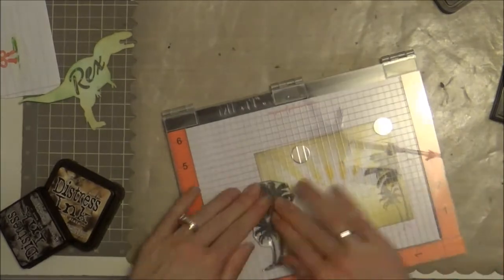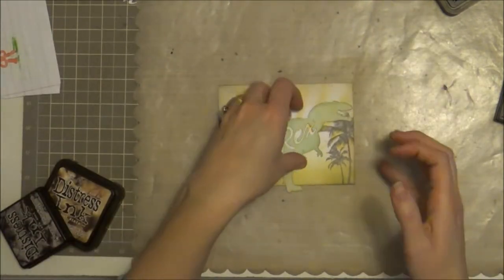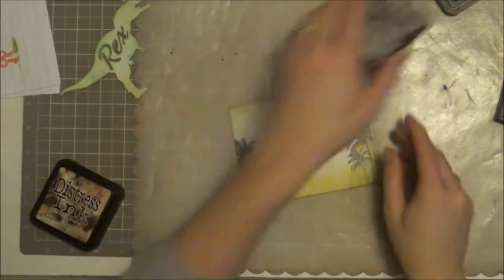And so I'm going to just add those same trees on the left, and then I am inking this or stamping this with the black soot.